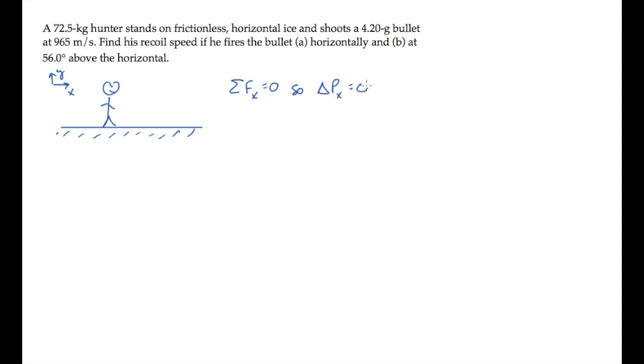Whatever the x component of momentum is in some initial state, it will have the same value in some later final state. We're asked in Part A to find the person's recoil speed if he fires a bullet horizontally. The bullet has a mass m sub b and is fired at a speed v sub b. The person recoils backwards to the left at this speed, and the person's mass is m sub p.